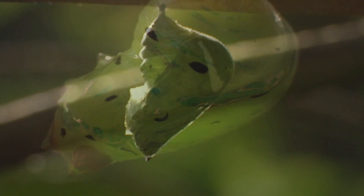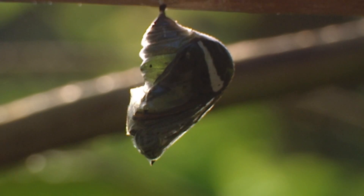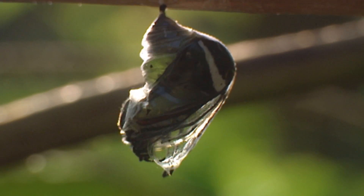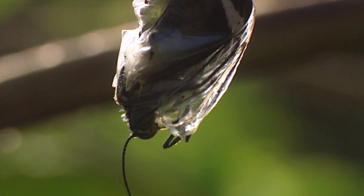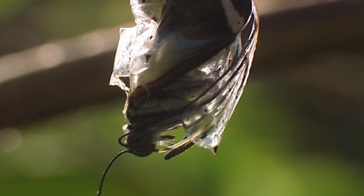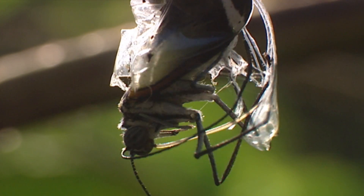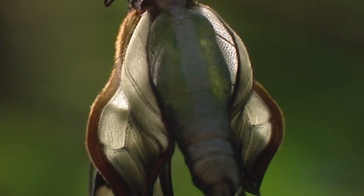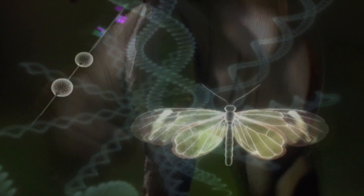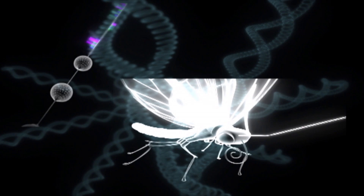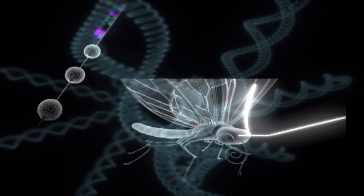You could say that Hox genes are responsible for making sure that all the parts of a body are in the right place. The Hox genes are arranged in the chromosome in an order which corresponds to the final position of the organs which will develop from them.